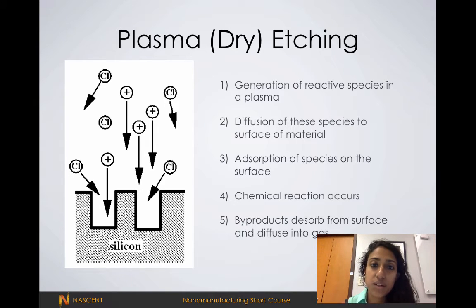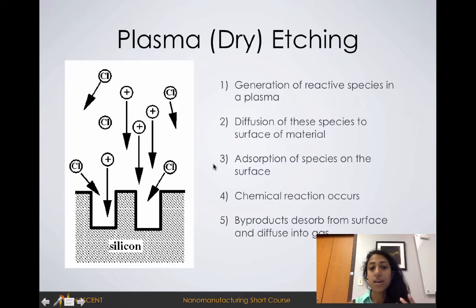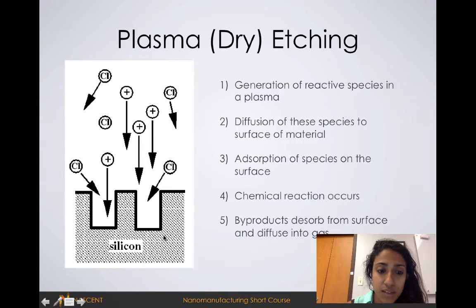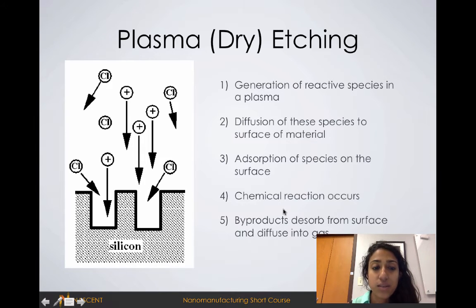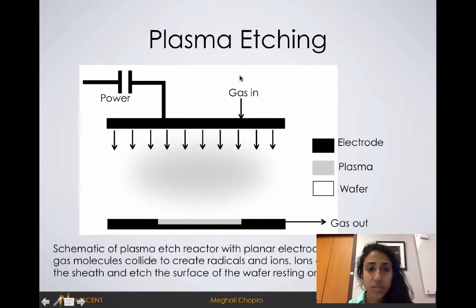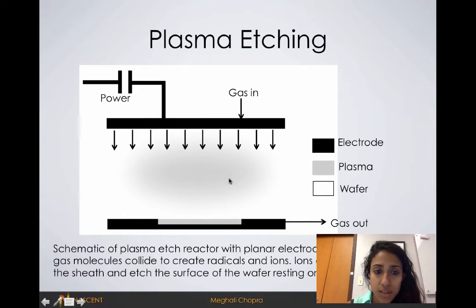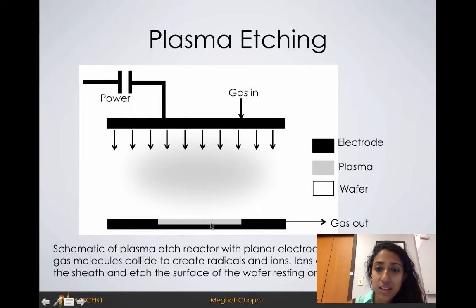Plasma can also be used to physically remove materials. Sometimes we can use radicals and ions and fire them at the surface of the material, kind of like bullets, and physically remove the substrate. Some etch recipes actually combine chemical reactions and these physical reactions to get higher etch rates and high selectivity. Here is an example of what a plasma reactor looks like — we have a power source, gas is fed in, and we have two electrodes. The ionized gas contains radicals and ions, and above the surface of the wafer is a sheath where all the ions are accelerated toward the surface we're trying to etch.